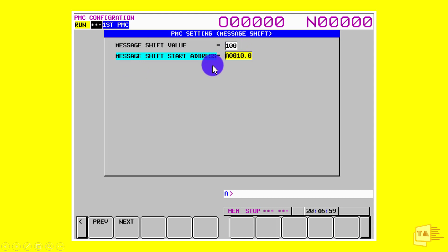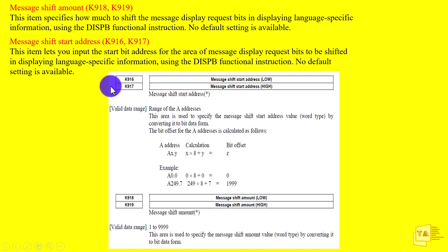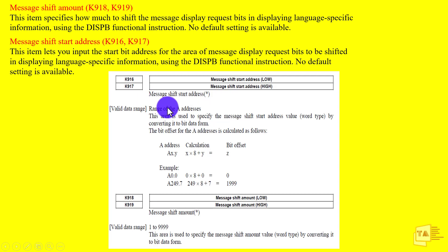Before knowing what shift value and start address mean, before you use the message shift function, you should use K918, K919, K916, and K917. These are the default keep relays for the message shift option. K916 and K917 are all about the message shift start address, where you can give the shift start address. K918 and K919 are where you mention your shift amount — how much the messages will be shifted.